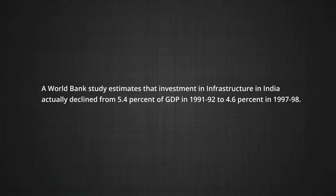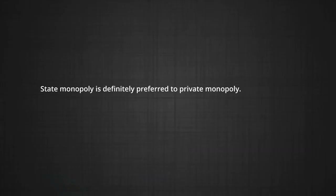This may adversely affect the growth of basic and heavy industries and infrastructure in the country. A World Bank study estimates that investment in infrastructure in India actually declined from 5.4 percent of GDP in 1991-92 to 4.6 percent in 1997-98. Reduction in government involvement could result in the substitution of a public monopoly with a private monopoly, which may lead to monopolistic exploitation. State monopoly is definitely preferred to private monopoly.